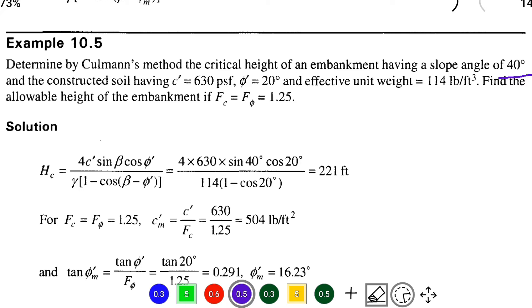Find the allowable height of the embankment if F_c and F_φ equal to 1.25. So we have to find out the height of the embankment.